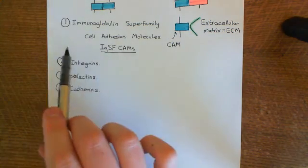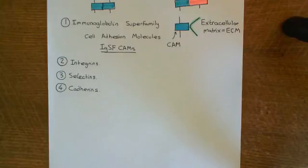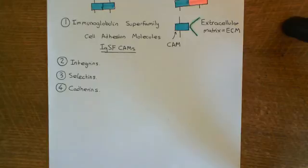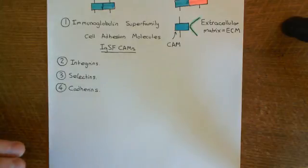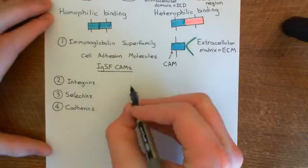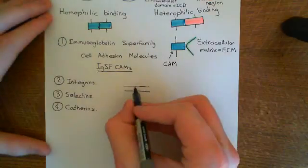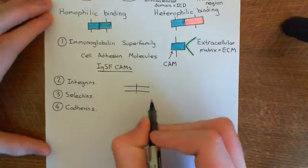We're going to spend the rest of this video looking at the immunoglobulin superfamily cell adhesion molecules. There are three examples which are very important in immunology and also in cardiovascular physiology. But first, let's discuss the structure in a little more detail. The transmembrane region in all of these immunoglobulin superfamily cell adhesion molecules is just a single membrane-spanning alpha helix.